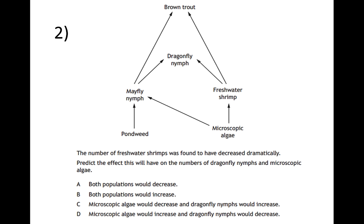Another multiple choice question: if the number of freshwater shrimps decreased dramatically, what effect would this have on Dragonfly nymphs and microscopic algae? Microscopic algae would increase because they're no longer being eaten by as many freshwater shrimps. Dragonfly nymphs would decrease because they eat both freshwater shrimps and Mayfly nymphs — half their food source has gone. They won't die out because they still have Mayfly nymphs, but their population would decrease.